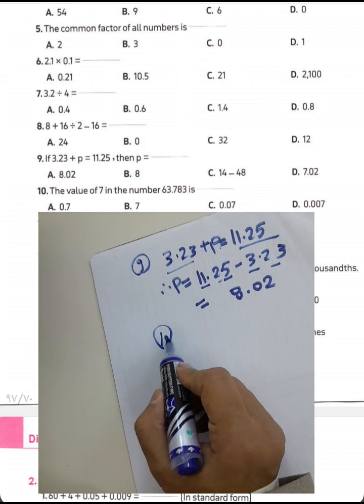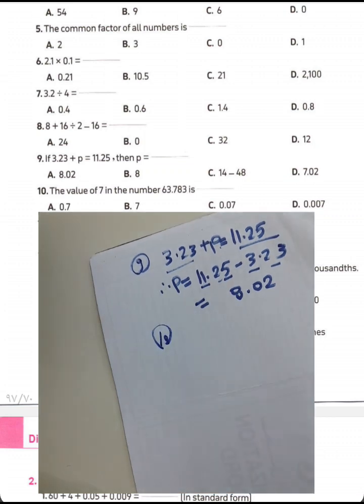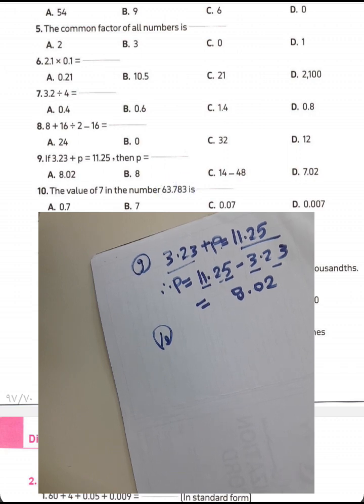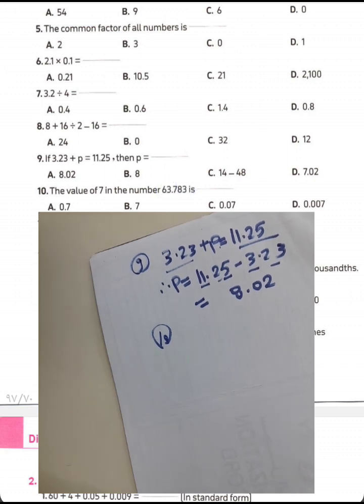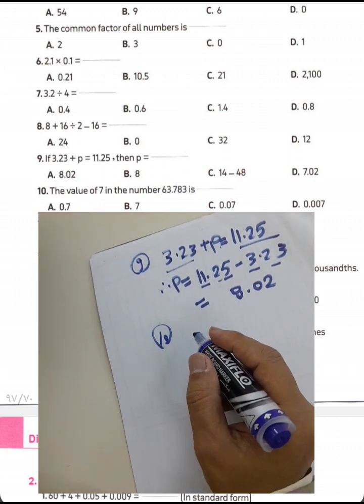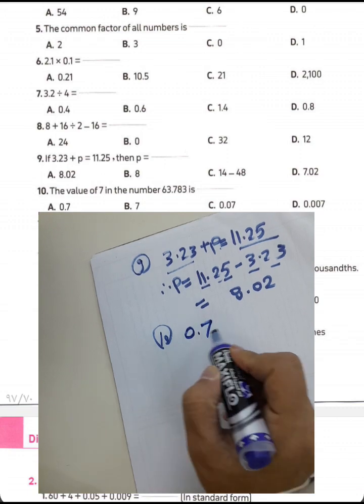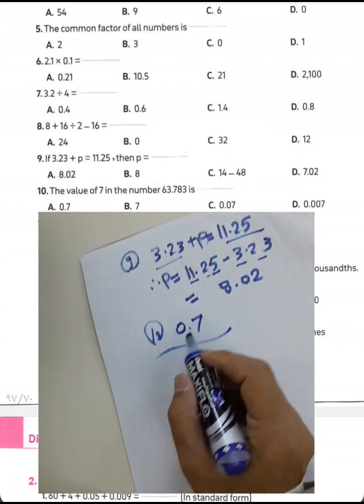Question 10: Find the place value of the digit 7 in the number 63.783. The digit 7 here lies in the tenths place. The result will be 0.7.